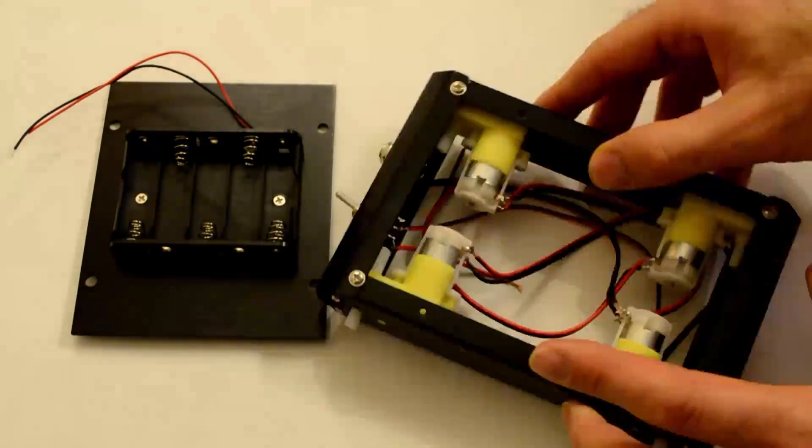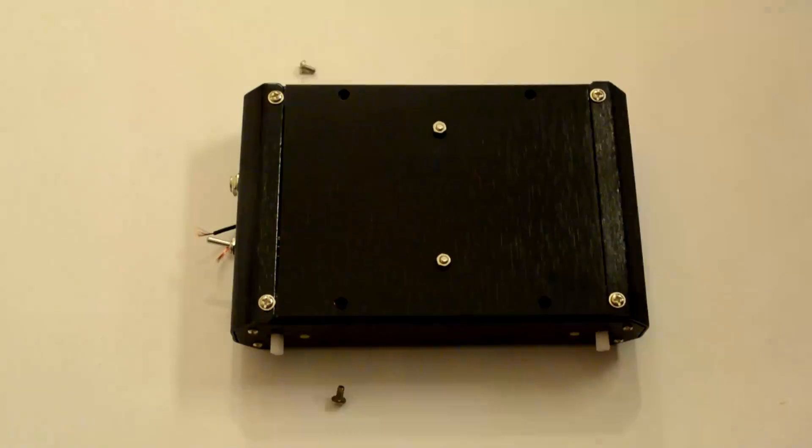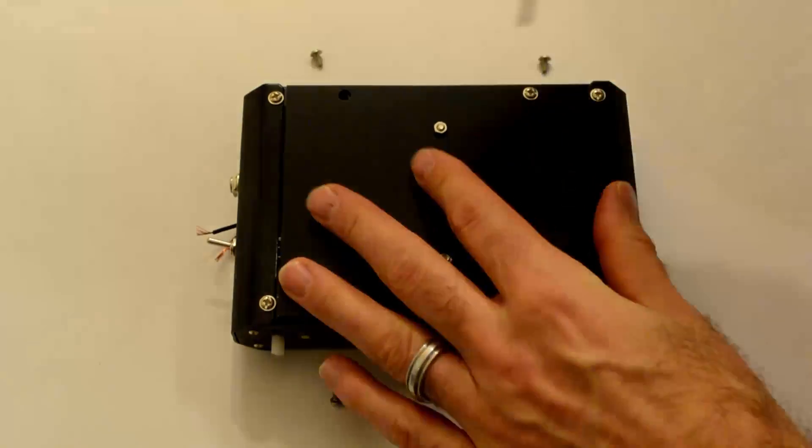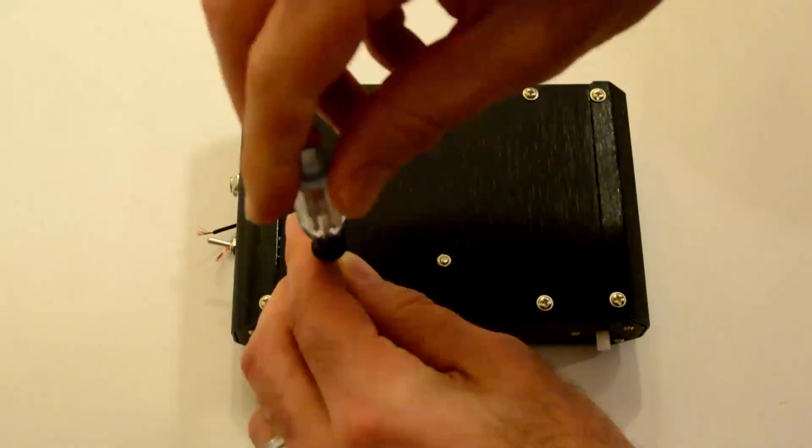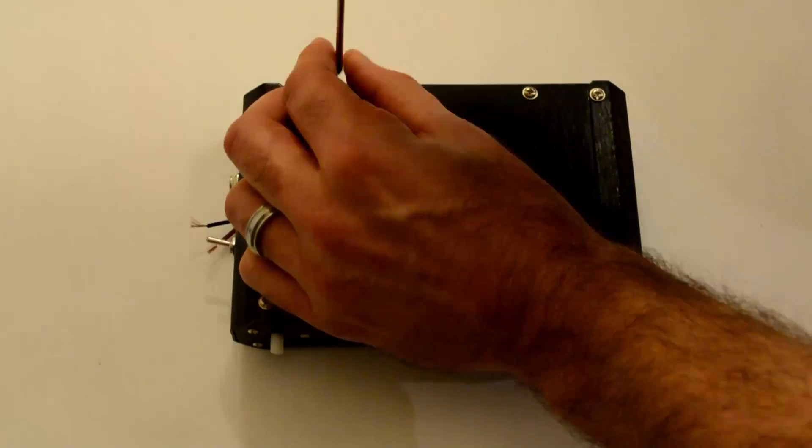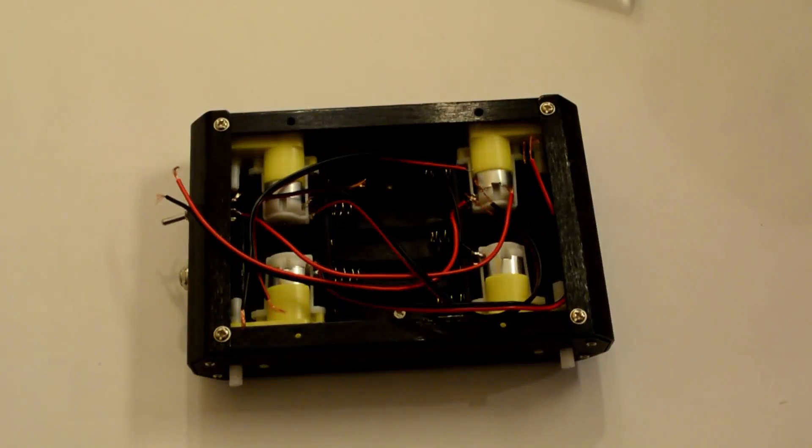So now take the base plate, which has the battery pack attached, and place it on the bottom of the platform. The base plate can go either way, but you want to orient it so that the wires from the battery pack are closest to the switch in the front.